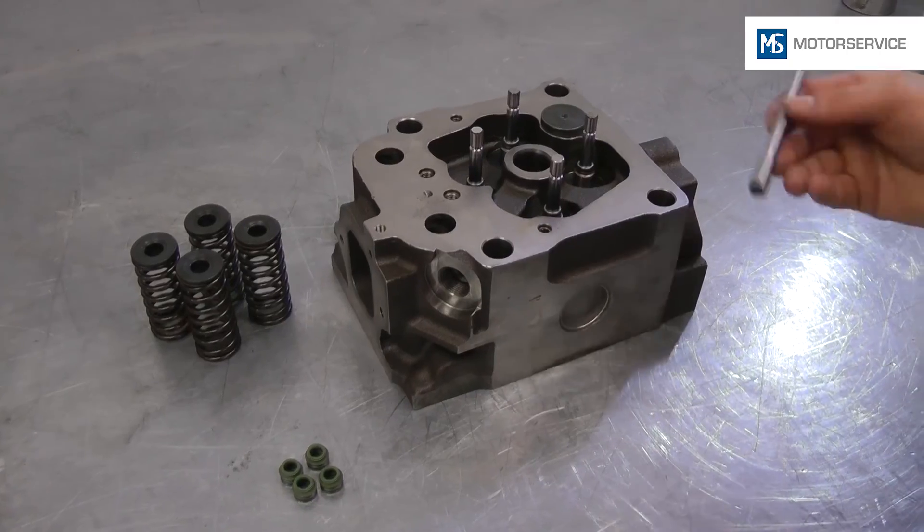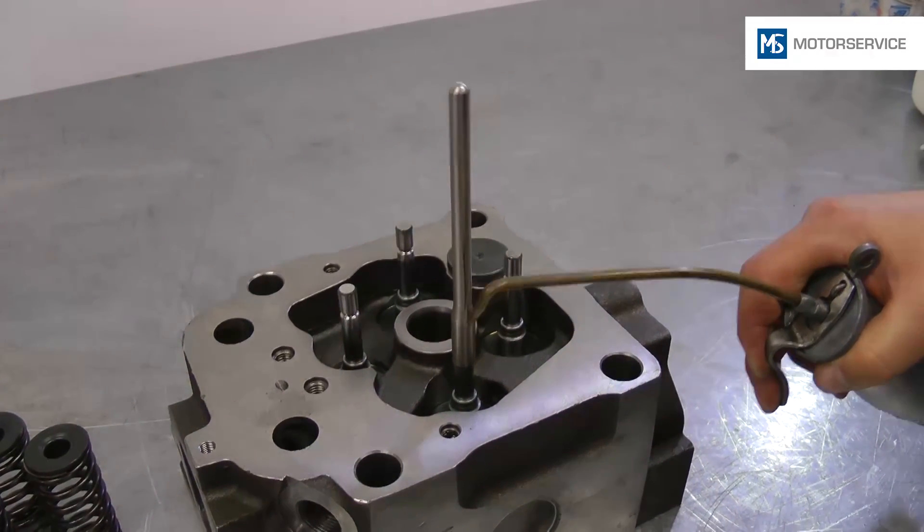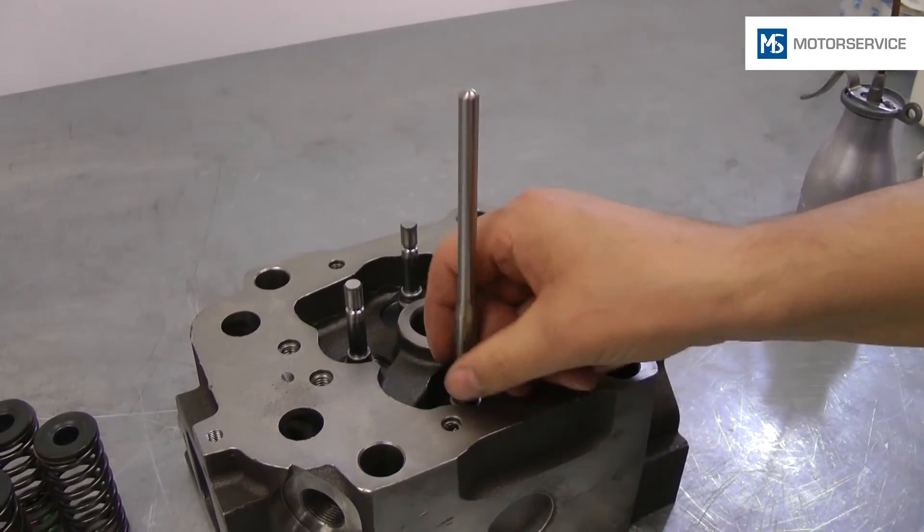For the valve stem seals not to get damaged during assembly, a protective bushing is used. Oil facilitates assembly of the seals.